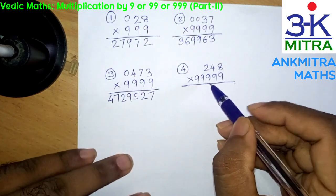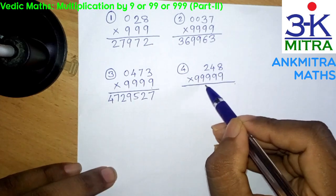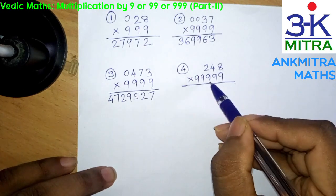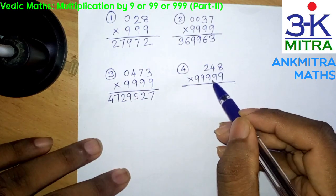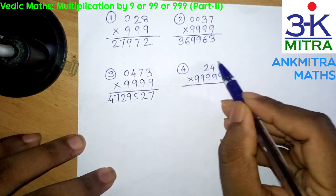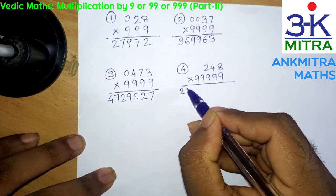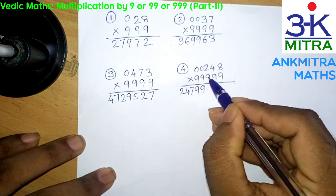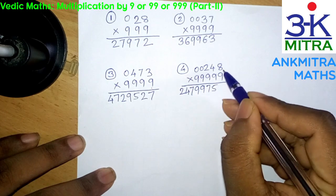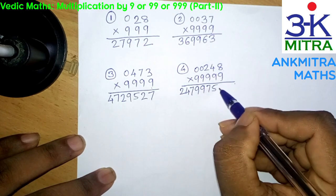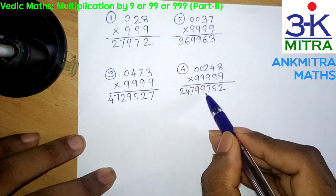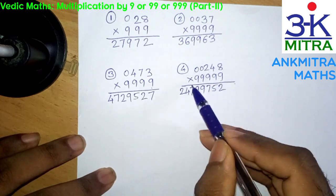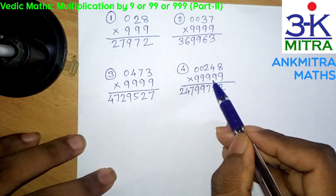Now let's look at the fourth example — 248 multiplied by five 9s, that is 99999. Quite a large number, but we can find the answer in just 2 or 3 seconds. Reducing 1 from 248 we get 247, we write it down here. Then imagine 2 zeros, start subtracting: 9 again 9, 9 minus 2 is 7, 9 minus 4 is 5, and for the final digit 10 minus 8 is 2. So the final answer is 2 crores 47,99,752 for 248 multiplied by 99999.